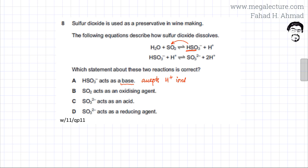In the backward reaction, HSO3⁻ is accepting an H⁺ ion. Alternatively, HSO3⁻ can be seen as producing OH⁻ ions. According to Brønsted-Lowry theory, anything that produces OH⁻ is also a base because OH⁻ accepts H⁺ to produce a water molecule. So HSO3⁻ ion does act as a base in the first reaction.